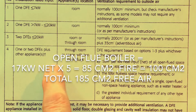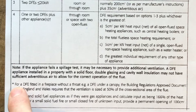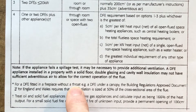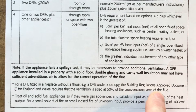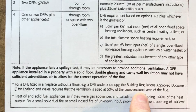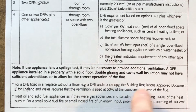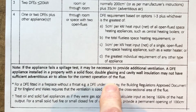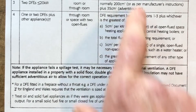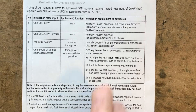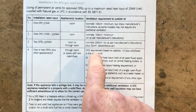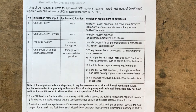The chart also notes at the bottom that for a DFE fire fitted in a fireplace without a throat — for example a DFE fire under a canopy — Building Regulations Approved Document J for England and Wales requires ventilation to be sized as 50% of the cross-sectional area of the flue. Most of the time these DFE fires are over 20 kilowatts. I'll leave this chart up for a few seconds so you can read it or you can pause it.